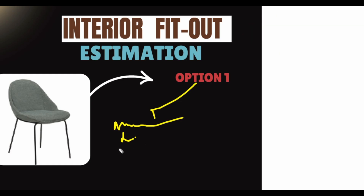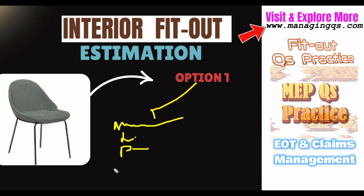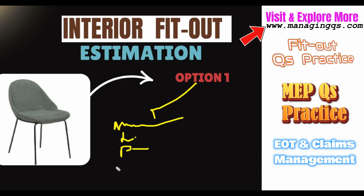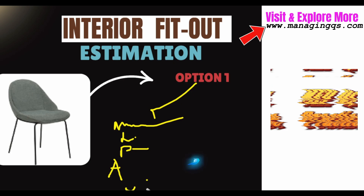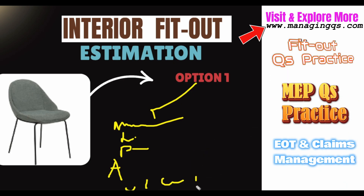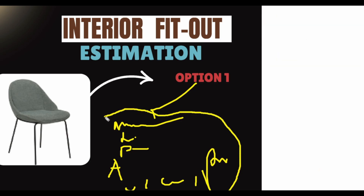If you are using any plant and machinery, you also have to consider the total plant and machinery cost. Finally, you need to know all the elements you have to include, plus overhead, contingencies, and profit. You put all these things together for the rate build-up. This is option number one to build up the rate for this chair.